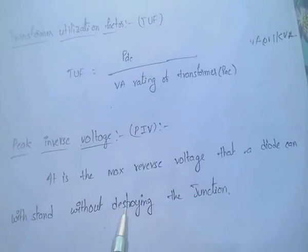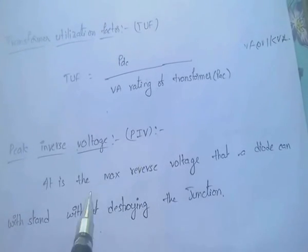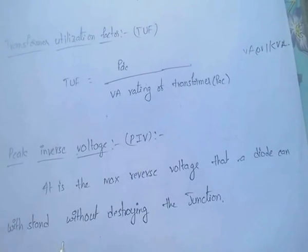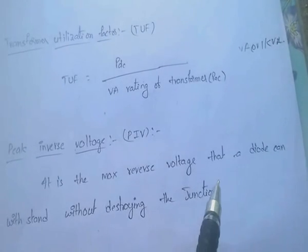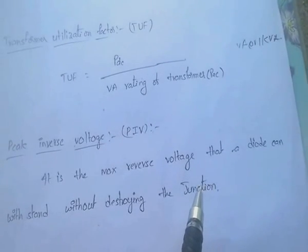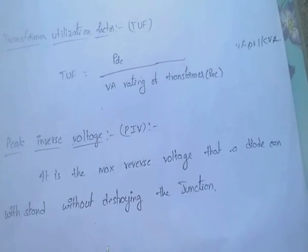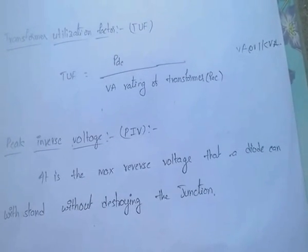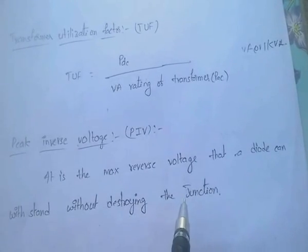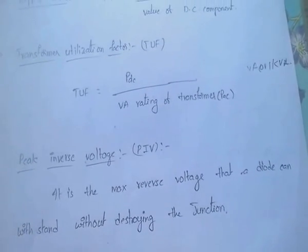Peak inverse voltage (PIV) is the maximum reverse voltage that a diode can withstand without destroying the junction.